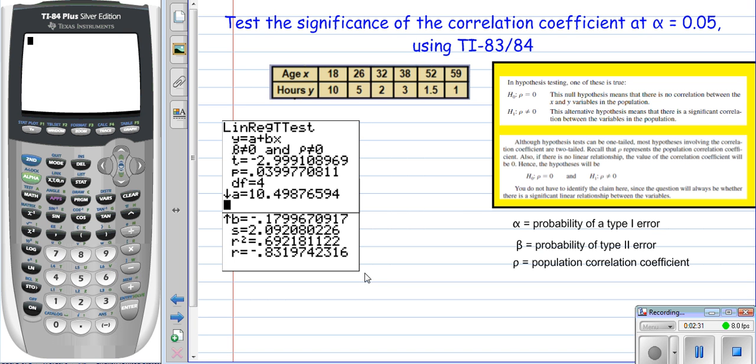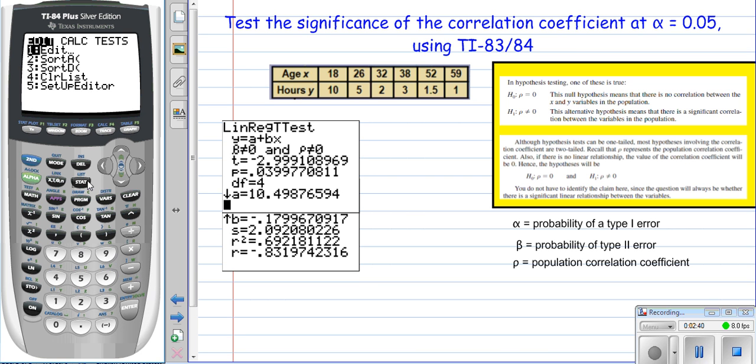Remember to put your list in. You should already have this in if you're doing this example. But you go to stat, go into edit. You enter your L1 as your X's and your L2 as your Y's.